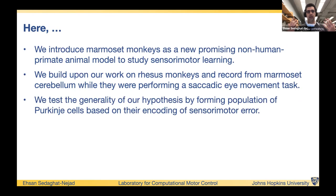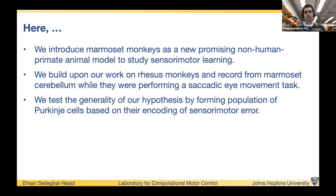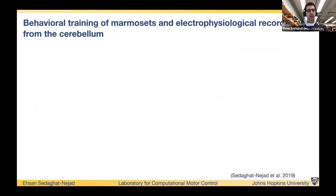First, we want to prove that marmoset monkeys are reliable and promising new non-human animal models for studying sensory-motor learning and specifically saccadic eye movements. We also test the generality of our hypothesis by recording from Purkinje cells of the marmoset cerebellum to see if we can use the same coordinate system and framework to make sense of their activity.